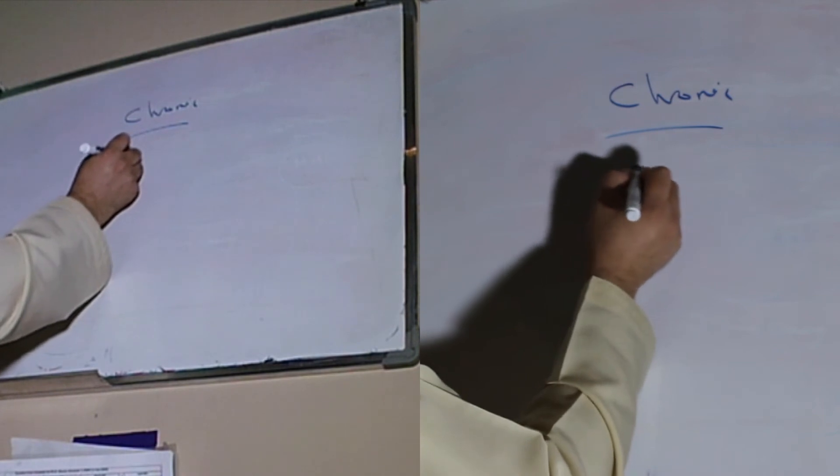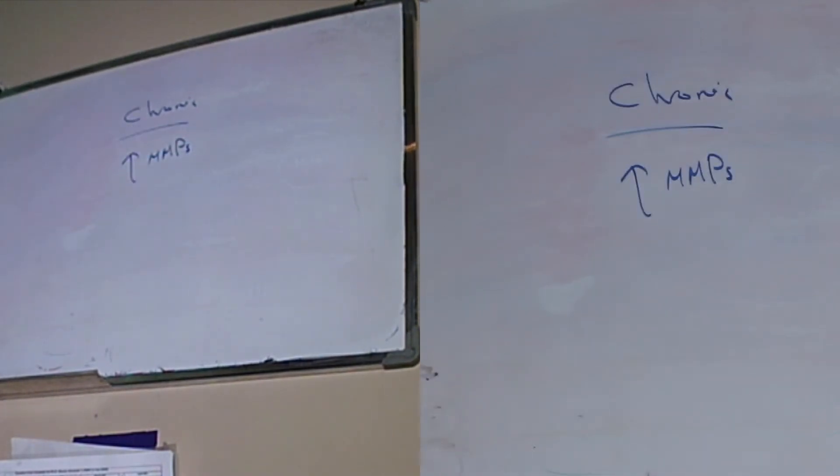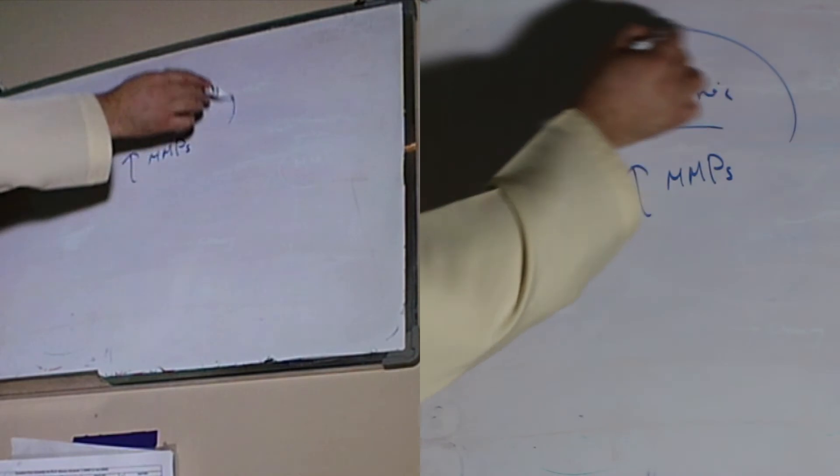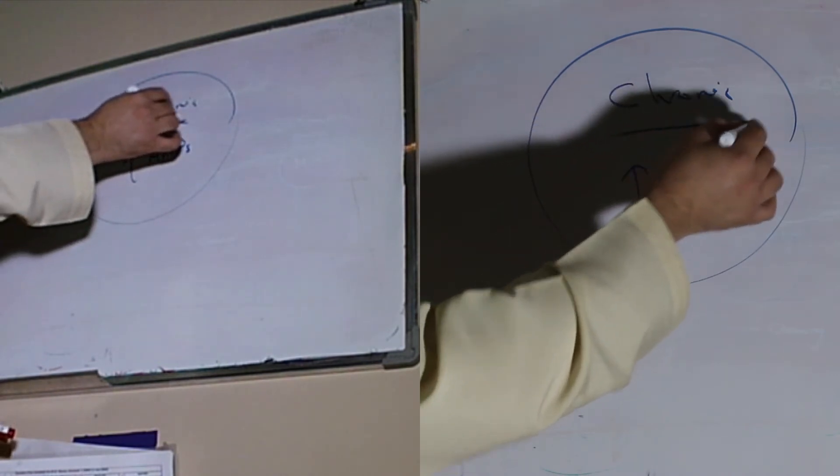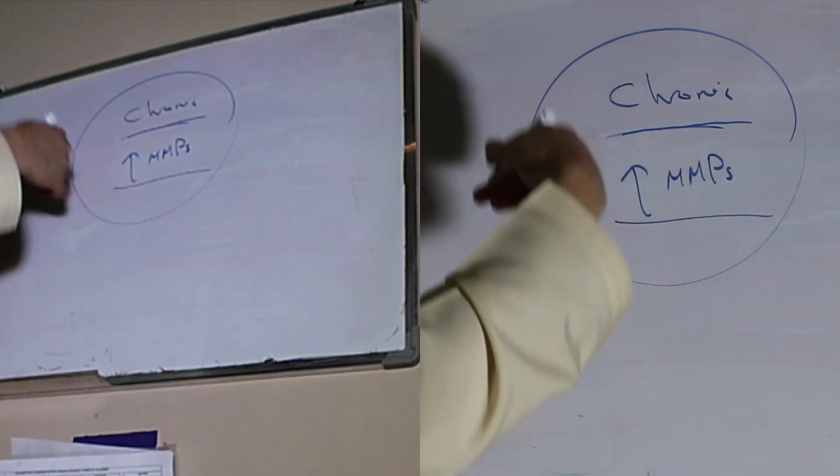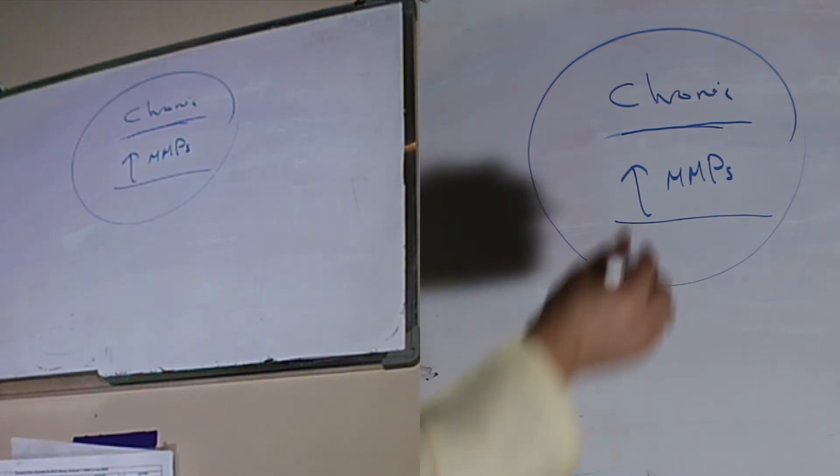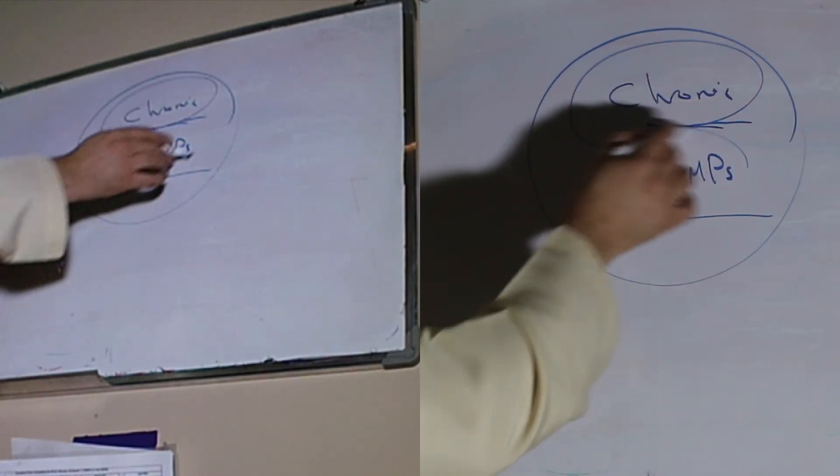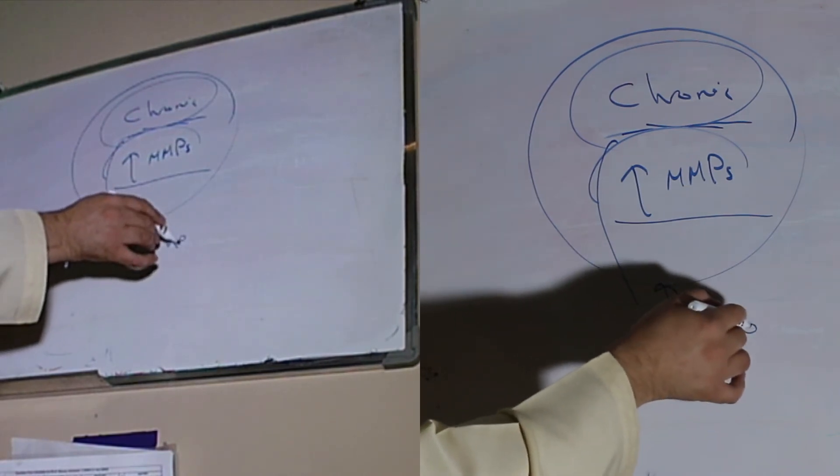Is having high MMPs. Remember this way: increased amount of MMPs as an example from the chronicity in wound care. And there are several characteristics related to the chronic wounds that will lead to long healing time.